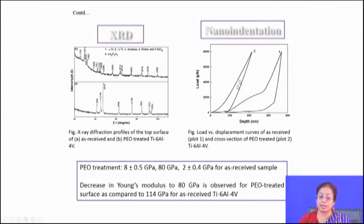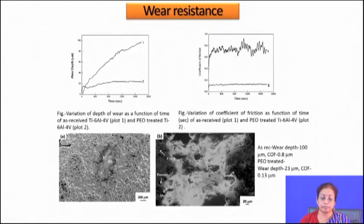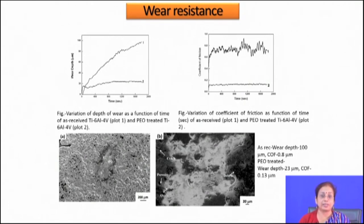X-ray diffraction analysis shows the presence of rutile as well as anatase phases on the surface, and in addition there is also some calcium phosphate phase formation. Nano-indentation results show that hardness increases while Young's modulus decreases in the outer region of the film. This decrease in Young's modulus is beneficial and was mainly due to the presence of porosity on the surface.